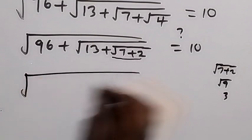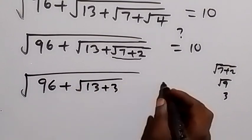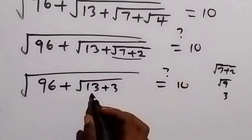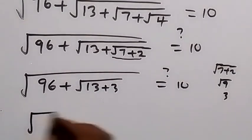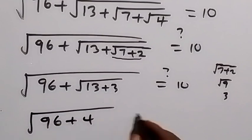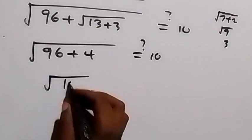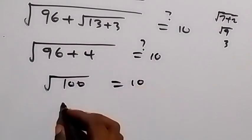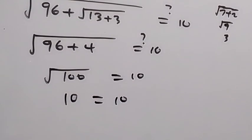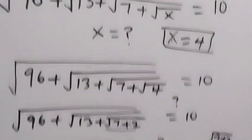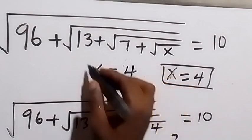So we now have square root of 96 plus square root of 13 plus 3. Then 13 plus 3 gives us 16, and square root of 16 is 4. So this becomes square root of 96 plus 4, which is square root of 100. Root 100 equals 10, so this is 10 equals 10. The left-hand side equals the right-hand side. Therefore, the value of x in this problem is 4.